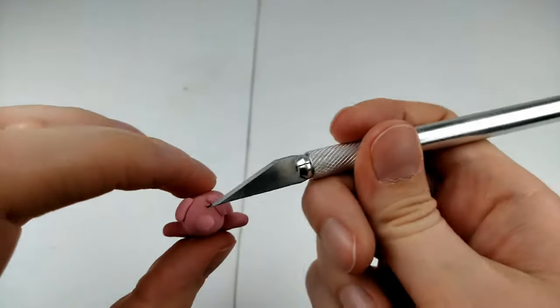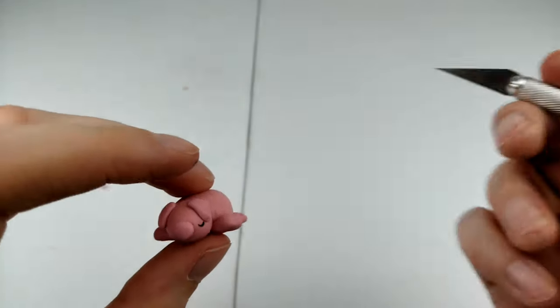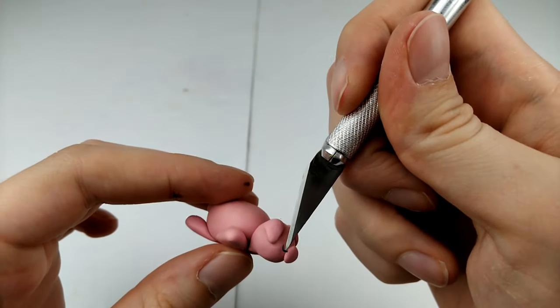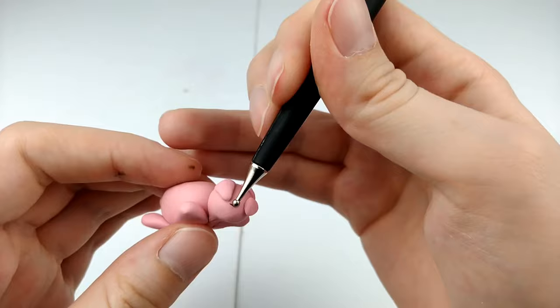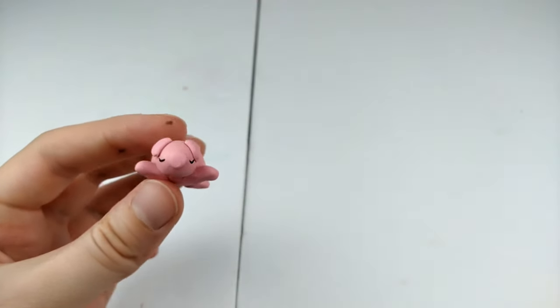Now comes the tricky part, we're going to be making some sleepy eyes. So we have to roll out very very thin logs of black clay again and we'll be very very carefully placing them on the face. And after baking, our little cutie is done.